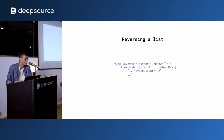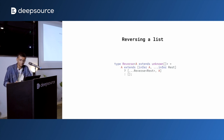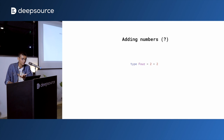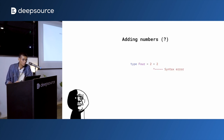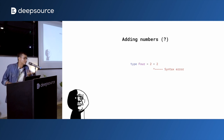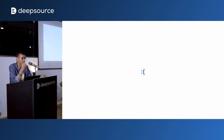Next up on our list is integer arithmetic. And integer arithmetic is easy — it's just type 4 = 2 + 2. That's simple, this will work. Or maybe it won't because it's a syntax error — it's not an expression. Maybe I lied to you, maybe you shouldn't trust me so easily. So how do we fix this? How do you perform arithmetic on integers if you can't even use operators on them?